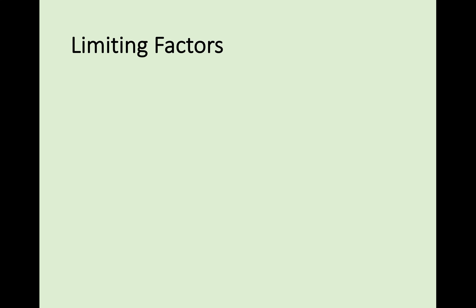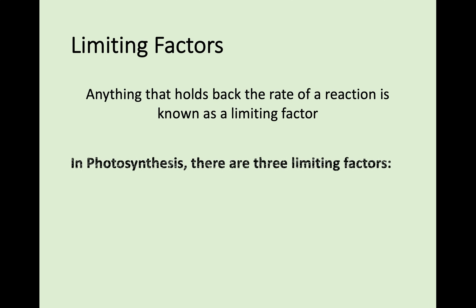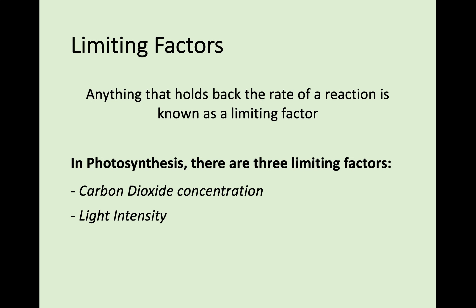Next, we're going to be looking at limiting factors — how the rate of photosynthesis can be slowed down. Anything that holds back the rate of any reaction is known as a limiting factor. In photosynthesis, you need to know three limiting factors: carbon dioxide concentration, light intensity, and temperature. You need to make sure you say these words exactly. If you're asked to give a limiting factor, don't just write 'light' — write 'light intensity'. Temperature is fine, but 'carbon dioxide concentration' is also one you need to say exactly. It is the concentration of carbon dioxide that is a limiting factor.